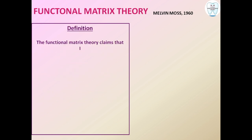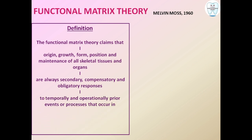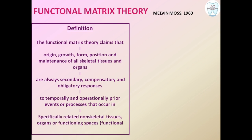What is the definition of this theory — what was the claim? The claim is that the origin, growth, form, position, and maintenance of all skeletal tissues and organs are a secondary, compensatory, and obligatory response to temporarily and operationally prior events or processes that occur in specifically related non-skeletal tissues, organs, or functioning spaces.